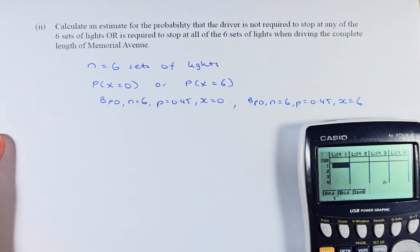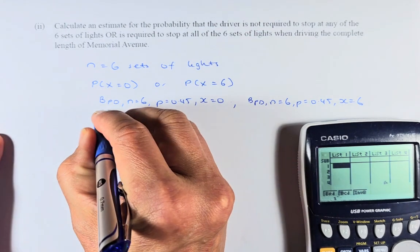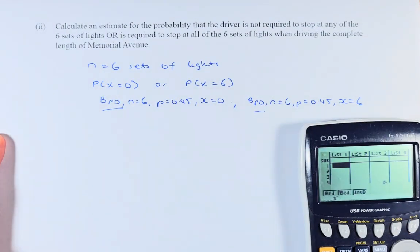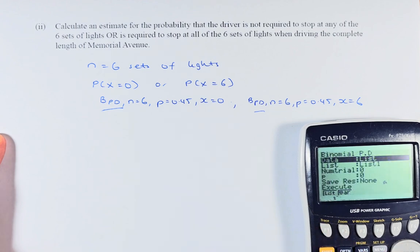Because this is the point, x equal to 0, then we have to use BPD. Remember, you have to use BPD for both. If it is more than 1 or less than 5, then you use the BCD, which is C, which represents the cumulative. So we are going to do BPD. So we are going to put F1. And now we are going to key in the data and get the value of x equal to 0.